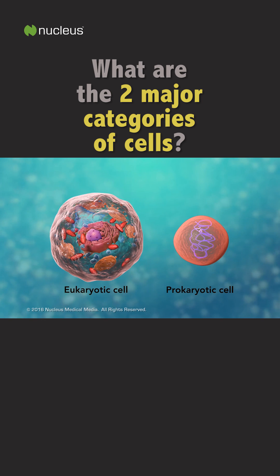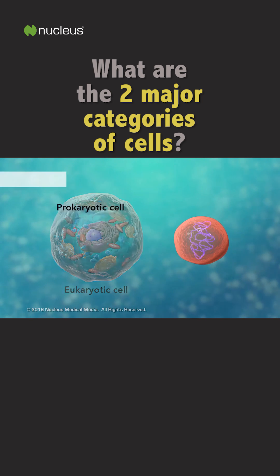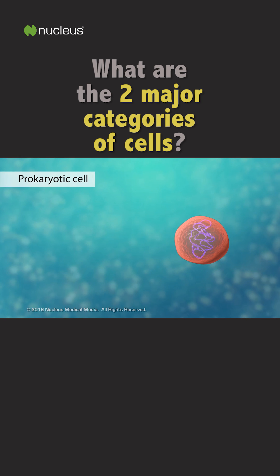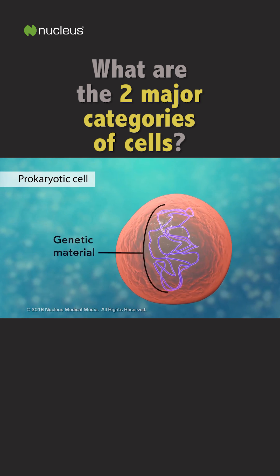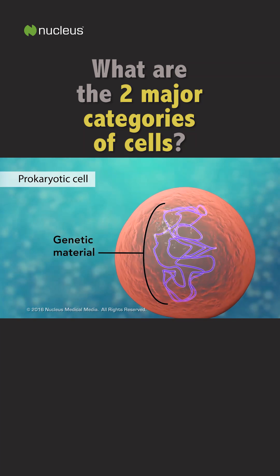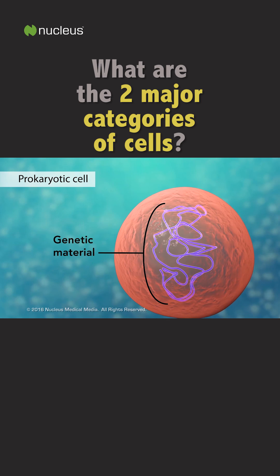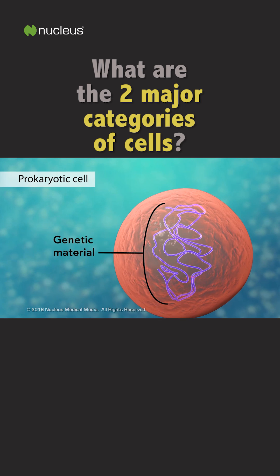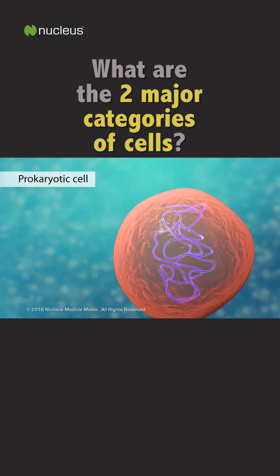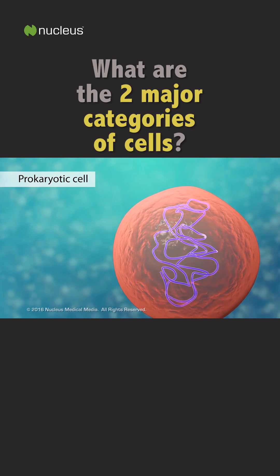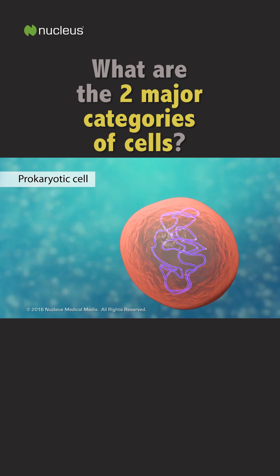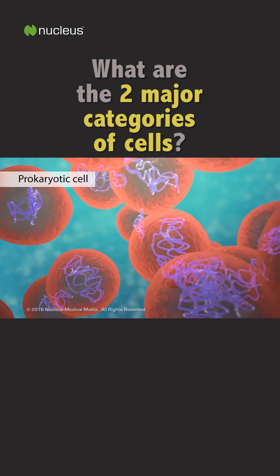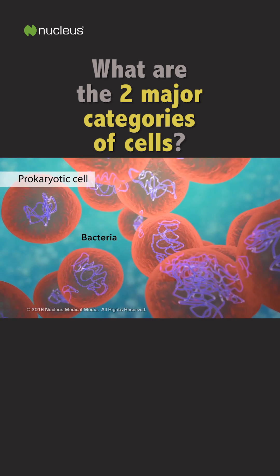The second category is prokaryotic cells. They don't have a nucleus or membrane-enclosed organelles. They do have genetic material, but it's not contained within a nucleus. Prokaryotic cells are always one-celled or unicellular organisms, such as bacteria.